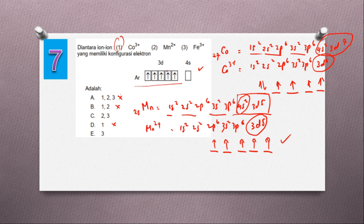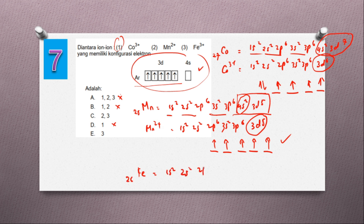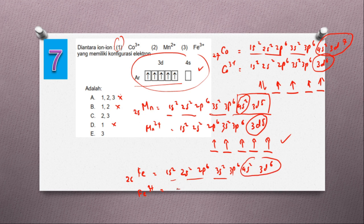Yang nomor 2 betul ya — diagram orbital Mn2+ sesuai dengan 3d5 setengah penuh. Sekarang untuk Fe3+, Fe nomor atomnya 26. Konfigurasi Fe: 1s2, 2s2, 2p6, 3s2, 3p6, 4s2, 3d6. Untuk Fe3+, tinggal 3d5 karena sudah lepas 3 elektron — 2 dari 4s dan 1 dari 3d. 3d5 sama dengan Mn2+.